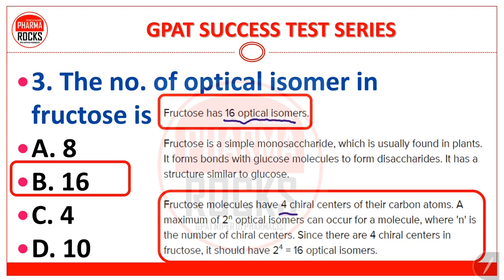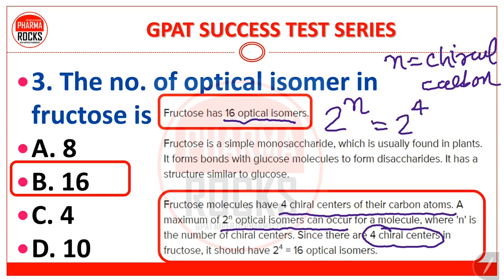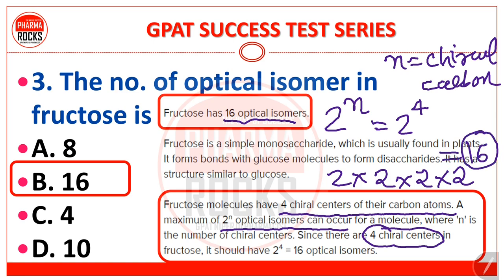Fructose molecule has 4 chiral carbon centers. The maximum number of optical isomers possible is 2^n, where n is the number of chiral centers. So 2^4 = 2 × 2 × 2 × 2 = 16. Therefore, the total optical isomers present in fructose are 16.